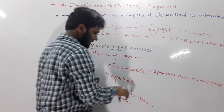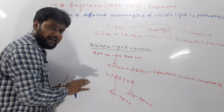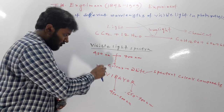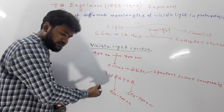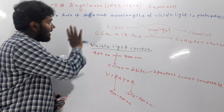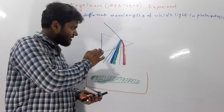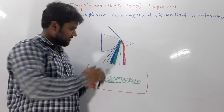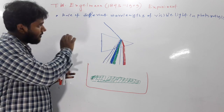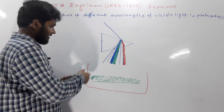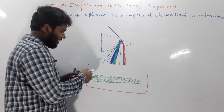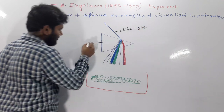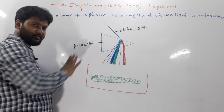The experiment shows us that among the different spectral components of white light, in which spectral component or colored light photosynthesis will be higher or lower. This was shown by Engelmann's experiment. This is the setup which was used by T.W. Engelmann. First, he split white light into its spectral components using a prism.